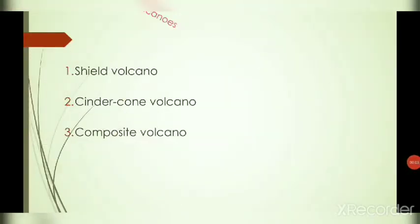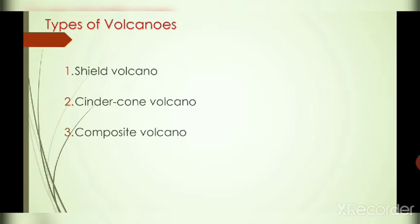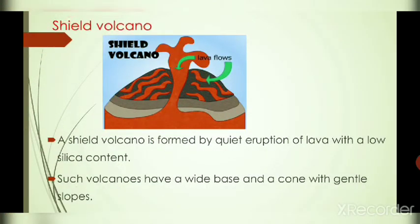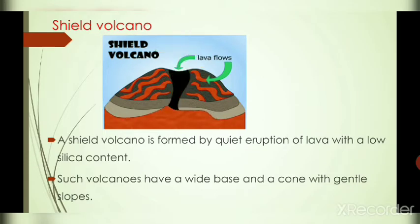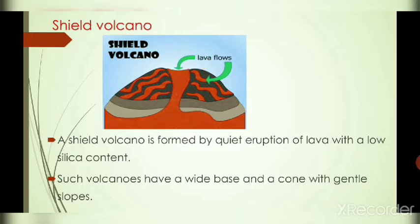Next, we are going to see the types of volcanoes. The shape of a volcano is based on the type of lava and the force of eruption. On the basis of shape, there are three types: shield volcano, cinder cone volcano, and composite volcano. Shield volcano is formed by quiet eruption based on lava with low silica content. Such a volcano has a wide base and a cone with gentle slopes. The volcanoes of Hawaii Island are examples of shield volcanoes.